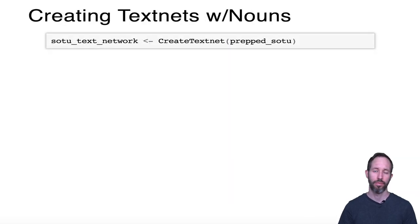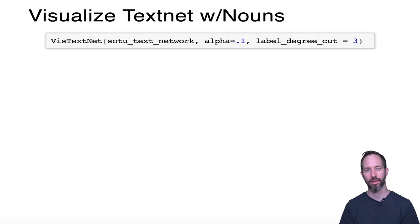Okay, so the core function within the package is called create_text_net. That reads in a prepped data frame and produces an igraph object. Igraph is a library in R for network analysis, and once you've got the data as a network, then you can begin doing anything you want with it: visualizing it, analyzing it, interpreting it, running various types of community detection on the network to pull out groups of either authors or groups of words.